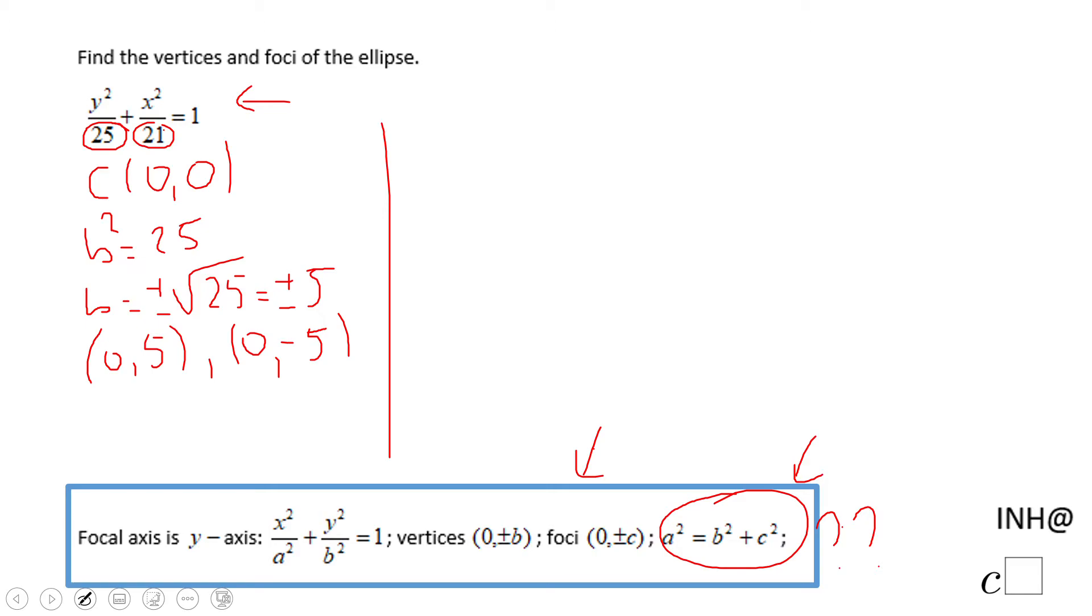c squared is the difference between a squared and b squared but you always need to get a positive number. So in this case it's going to be 25 minus 21 and that will be 4.